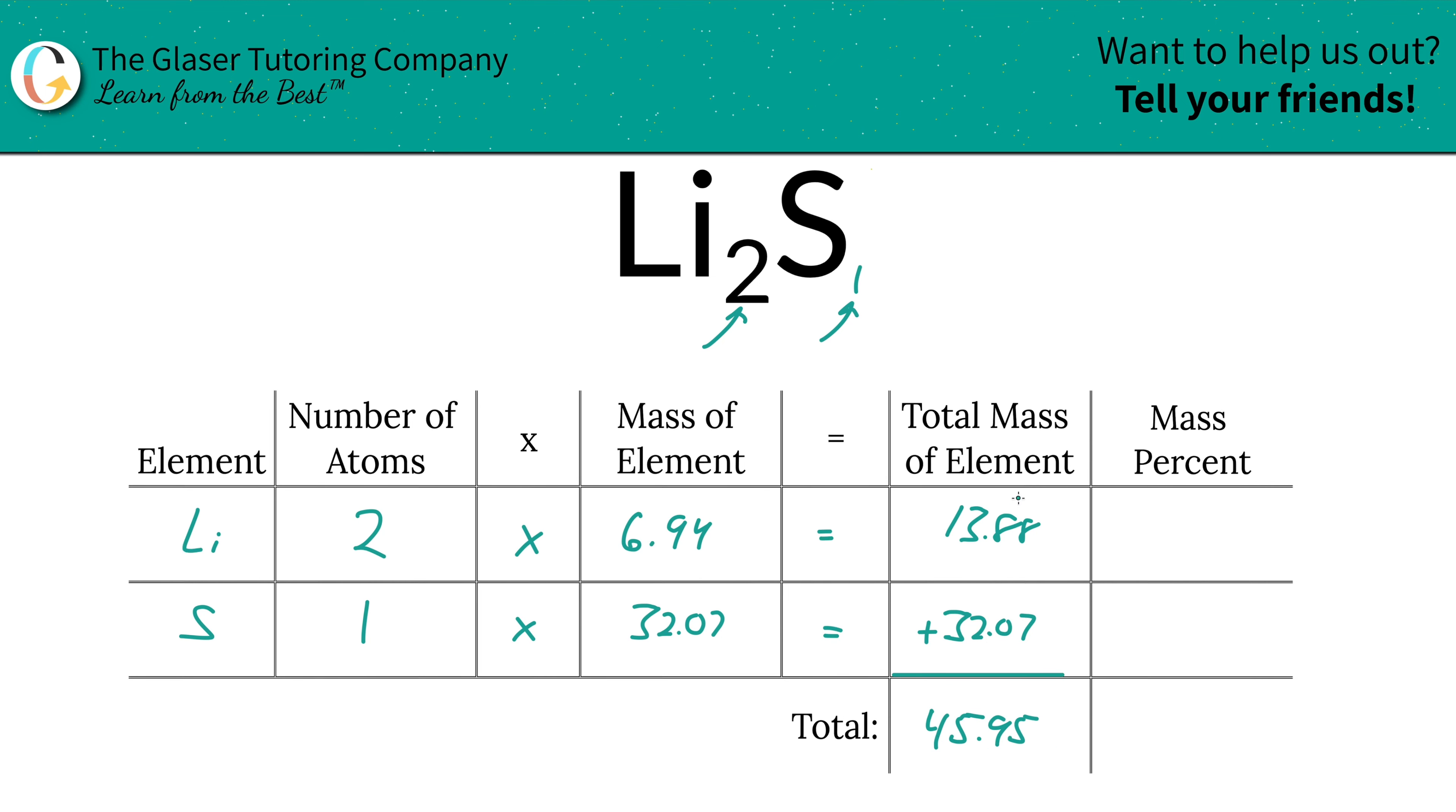So to find the mass percent of lithium, we're going to take the total mass of that lithium, 13.88, and then divide it by the total mass of the compound, 45.95. Hence why we had to do that first. And then we multiply by 100 because this is a simple percent calculation - part over whole times 100.